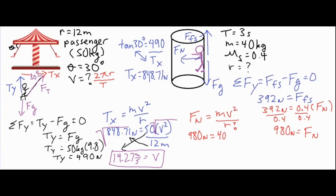Now the centripetal force is 980 newtons, and we have a mass of 40 kg. But there are still too many unknowns, so we substitute velocity: v = 2πr/t. Squaring that gives v² = 4π²r²/t². Substituting into the centripetal equation, one of the r's cancels, leaving us with r on one side. Since t = 3 seconds, t squared equals 9.